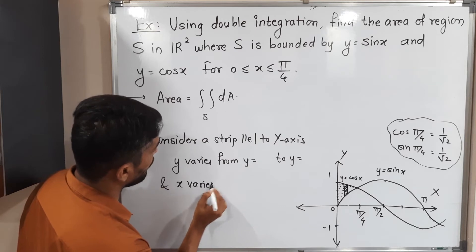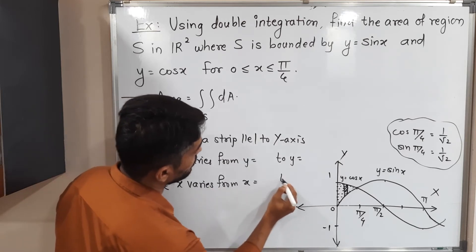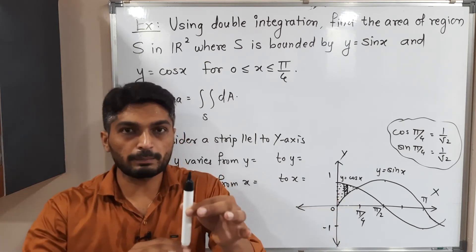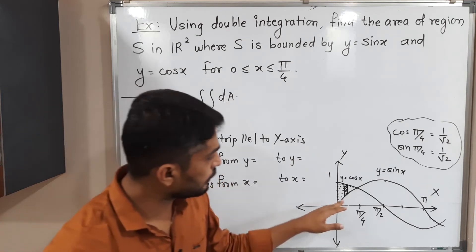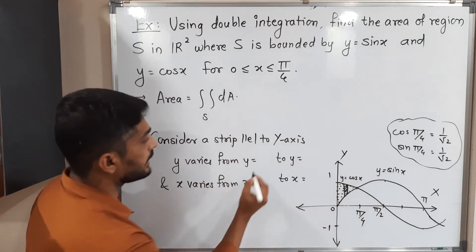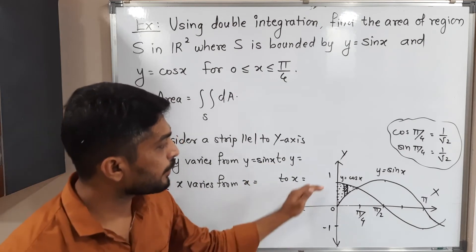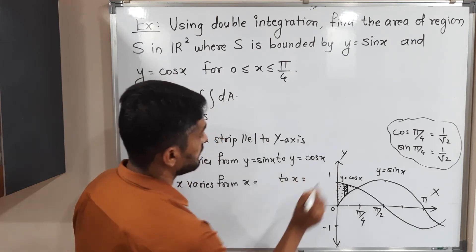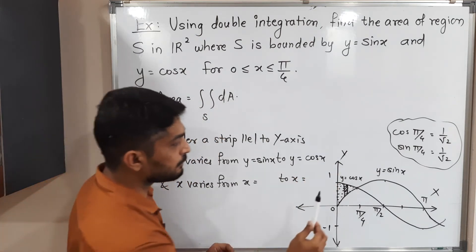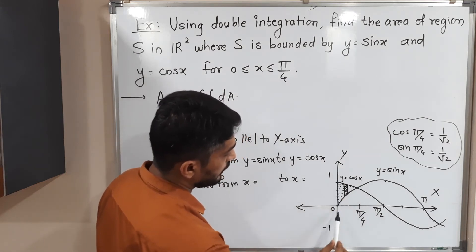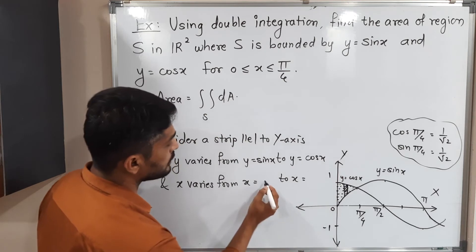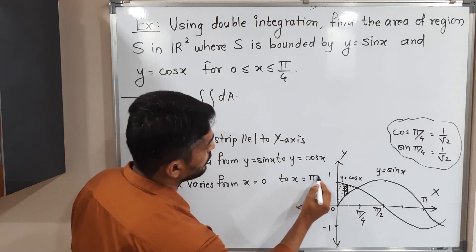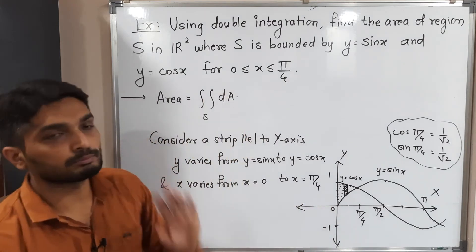The strip is bounded below by the sine curve, so y = sin x is the lower limit. The strip is bounded above by the cosine curve, so y = cos x is the upper limit. The strip moves from left to right: it starts at the y-axis, where x = 0, and moves up to x = π/4. So x varies from 0 to π/4, which also matches the given condition.